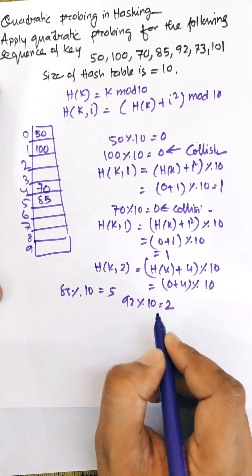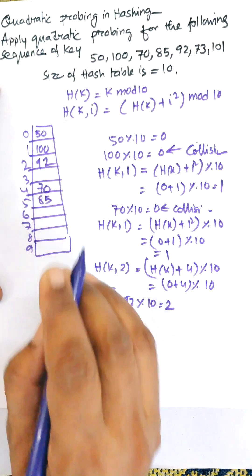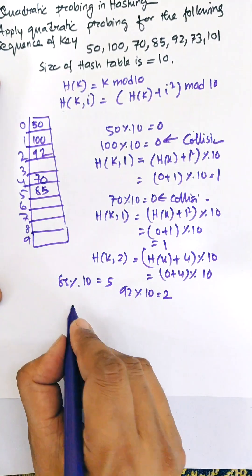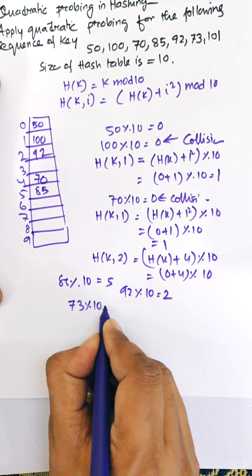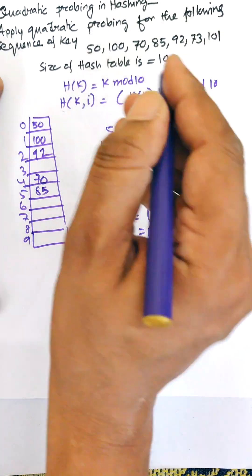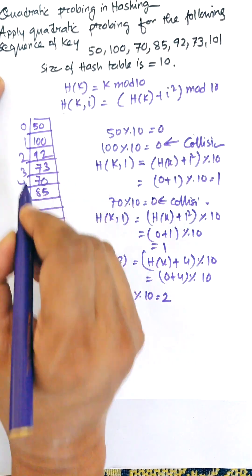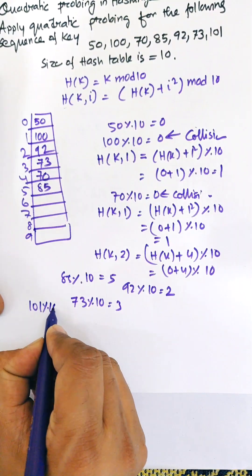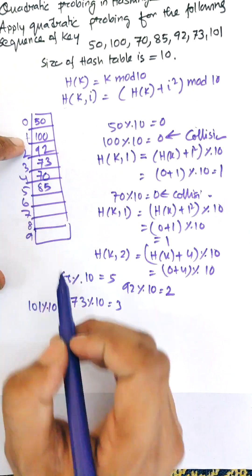25 mod 10 = 5, so 25 is stored at location 5. 92 mod 10 = 2, no collision, so 92 is stored at location 2. 73 mod 10 = 3, so 73 is stored at location 3.